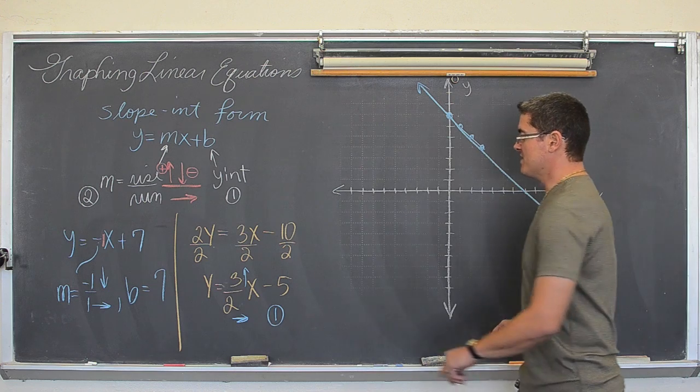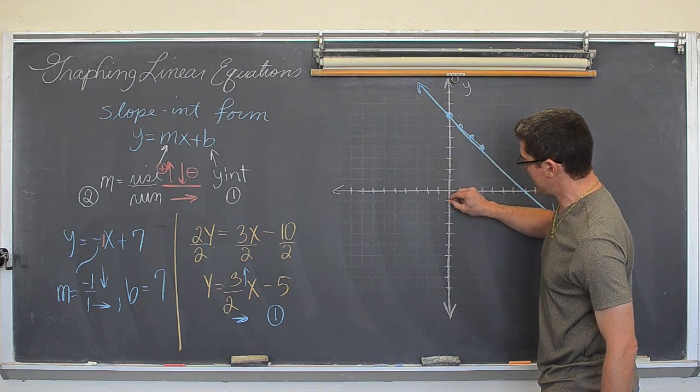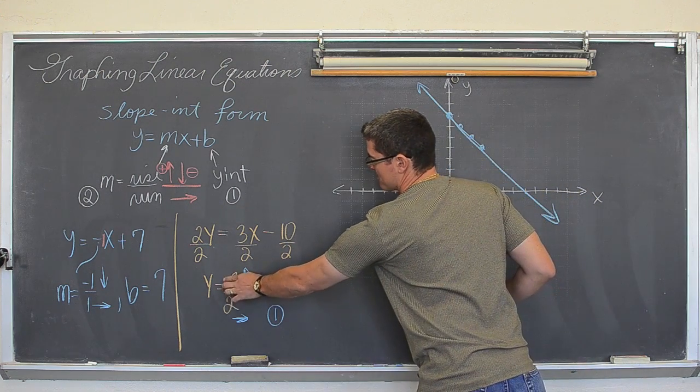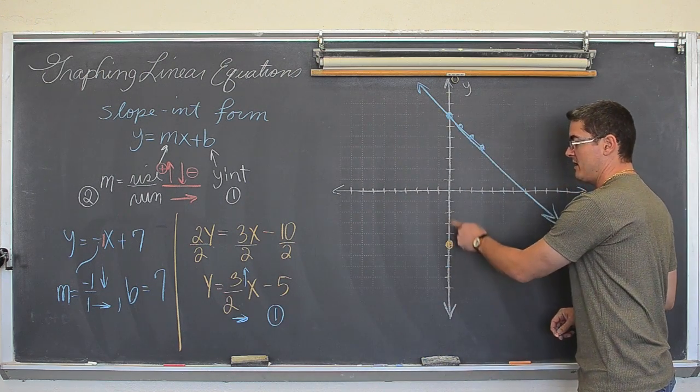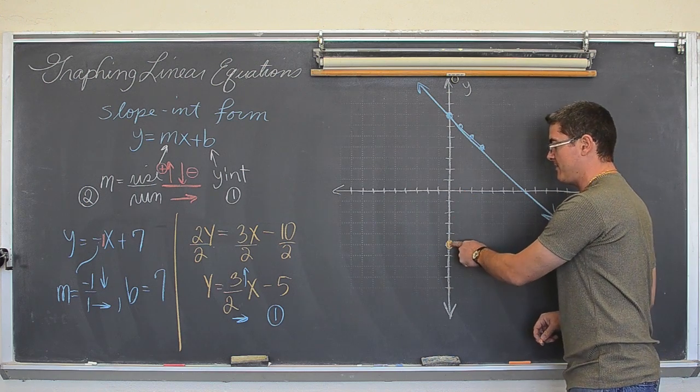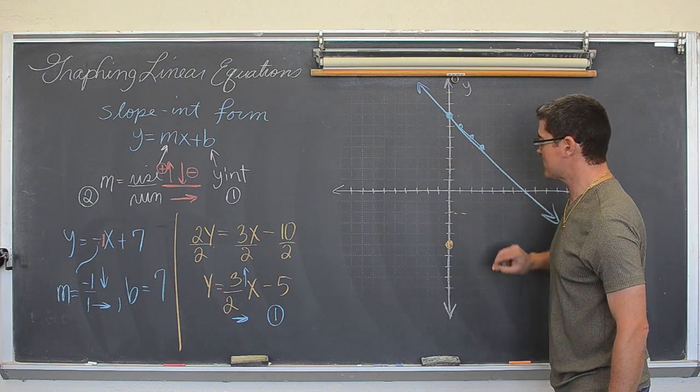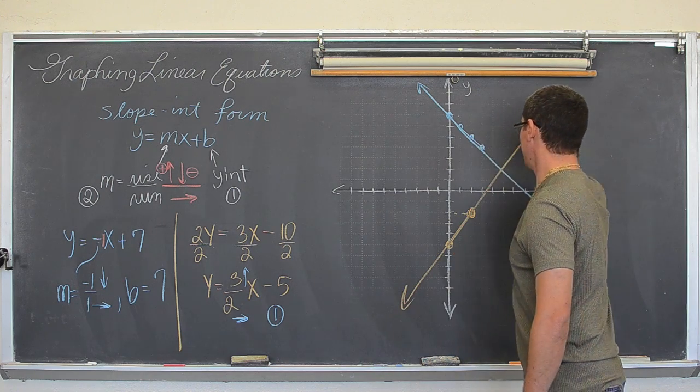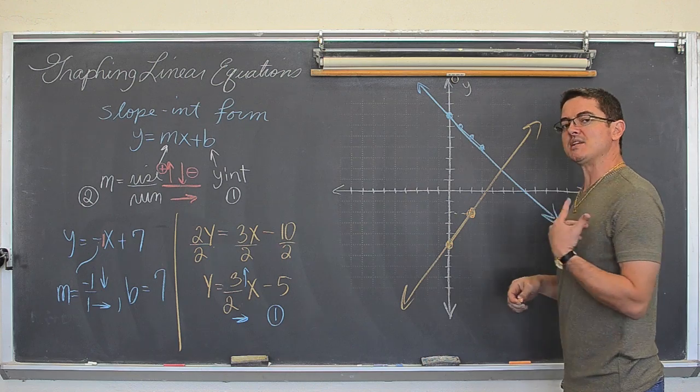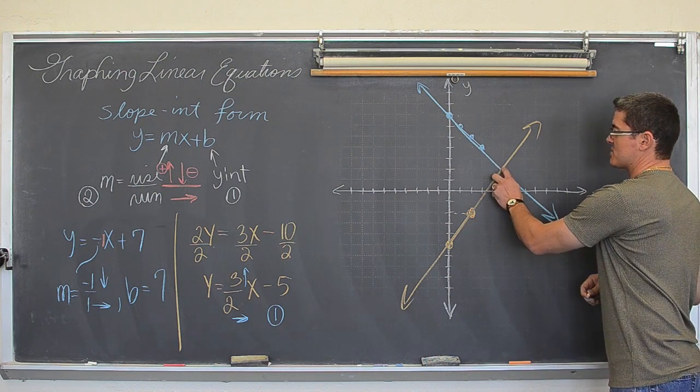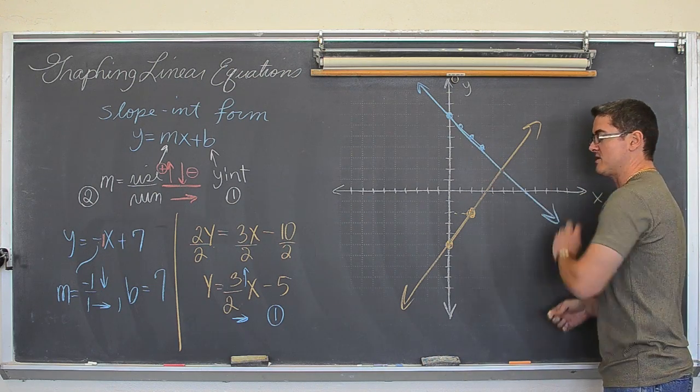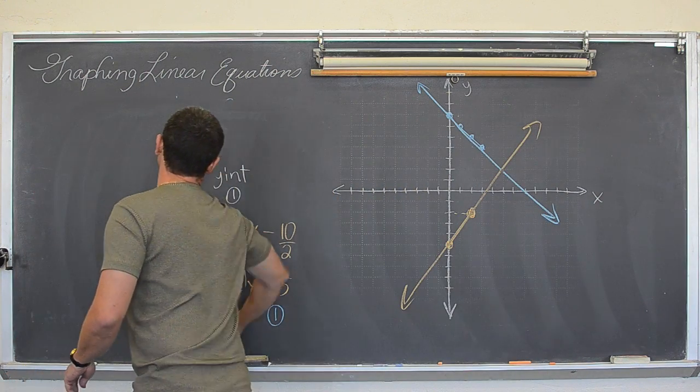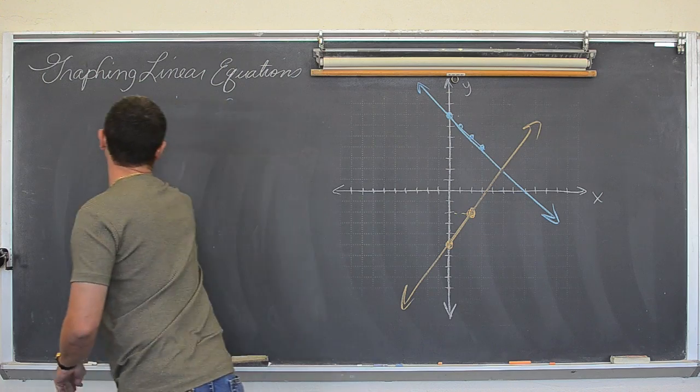So this is crossing at the y value of negative five. So one, two, three, four, five. It does have a slope that is positive three over two. So from this point, not the origin, but from the y intercept, we are going to go up three and over two and make a new point. And voila, we have a line. Now if you were doing a systems of equations, that solution to the systems of equations would be where those two lines cross. We are not, but I am just going to throw that out there for you.